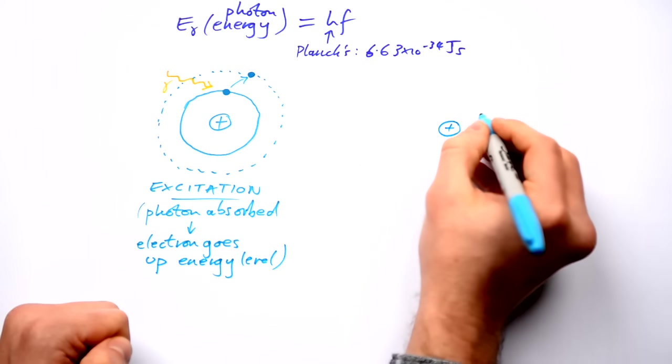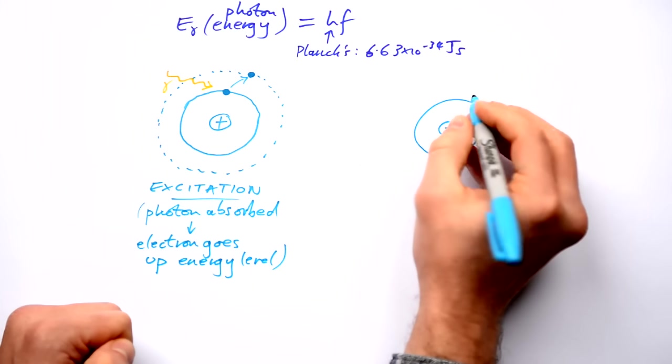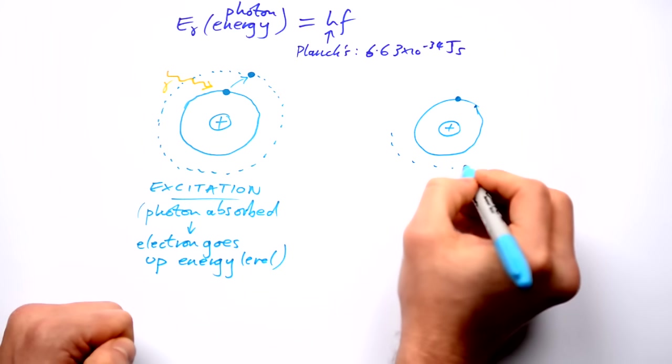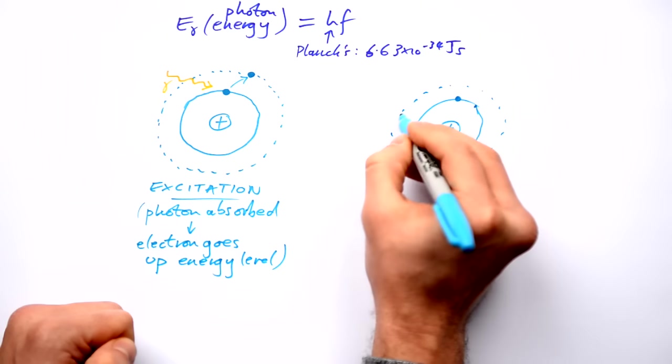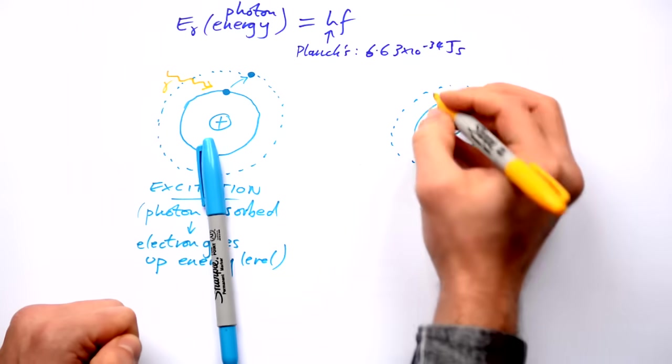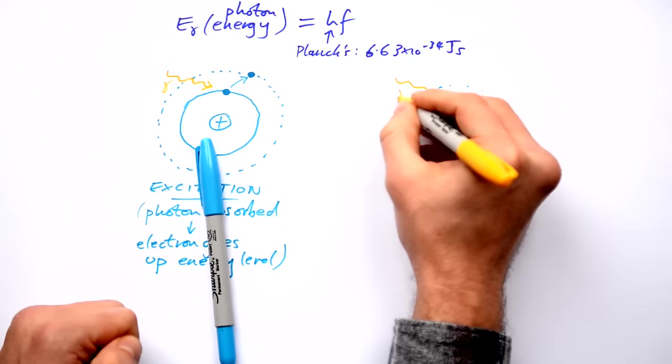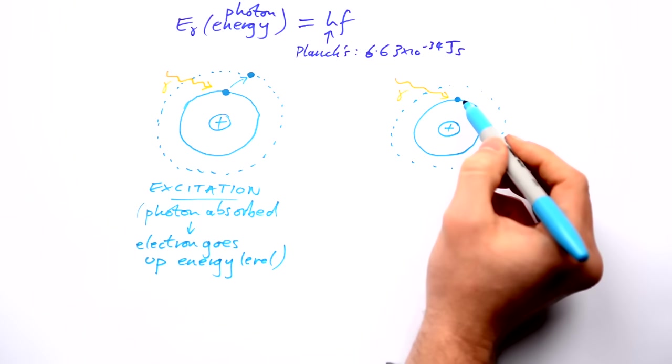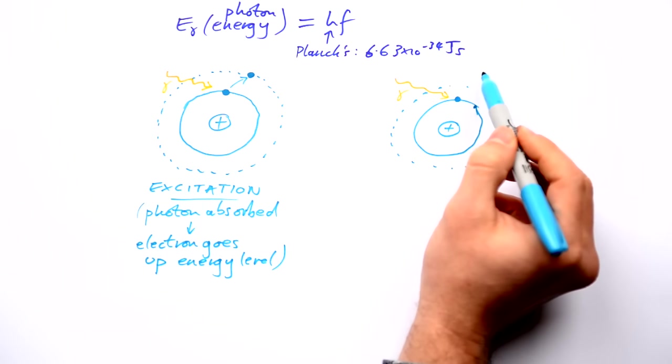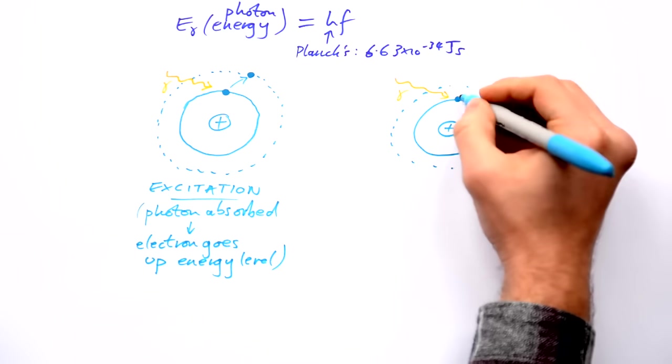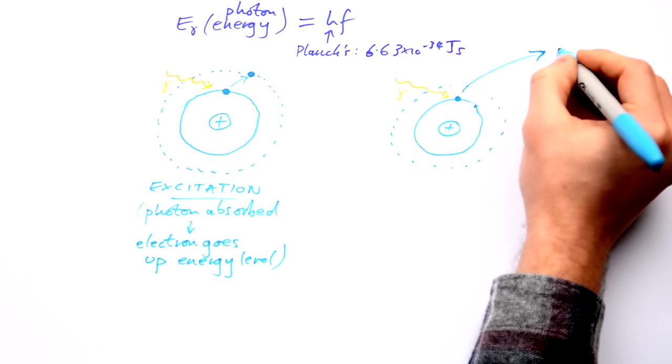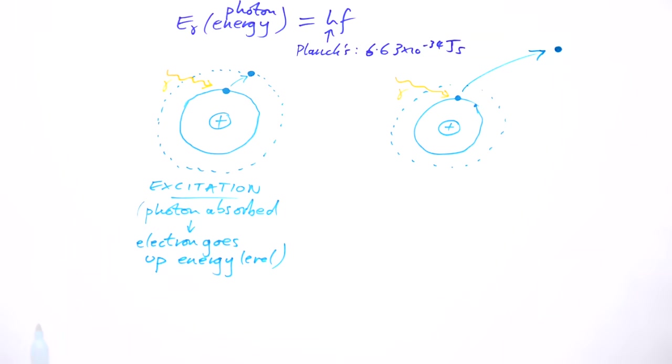Another thing can happen as well though. If the photon has loads of energy, so it's got a higher frequency, then the electron has way too much energy to go to the next energy level or an energy level above that. It actually just completely moves away from the atom.